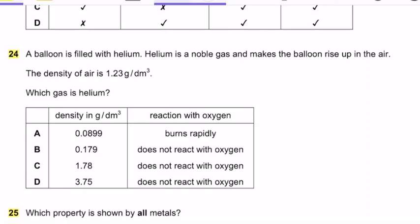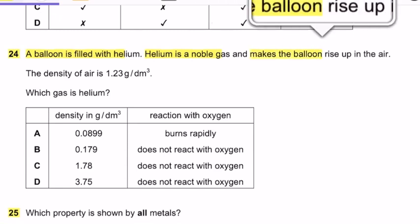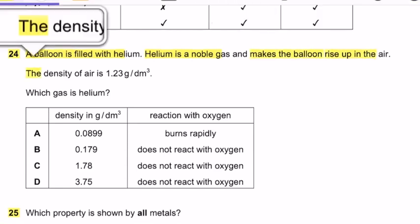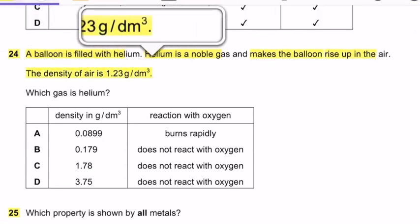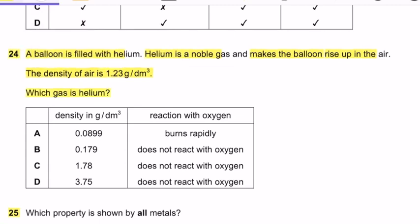Question 24: A balloon is filled with helium. Helium is a noble gas that makes the balloon rise in air. The density of air is 1.23 g/dm³. You need to choose helium as unreactive and less dense than air, so you can easily identify the correct option.